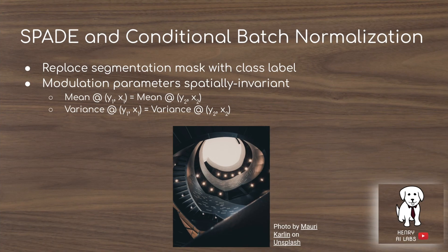Here's how you would get from conditional batch normalization to spatially adaptive normalization — the SPADE technique in GAU-GAN. All you would do is replace the segmentation mask with a single class label like a one-hot vector, and then have the same mean-variance modulation parameters for every spatial location. Those two changes would turn the SPADE technique into conditional batch normalization.